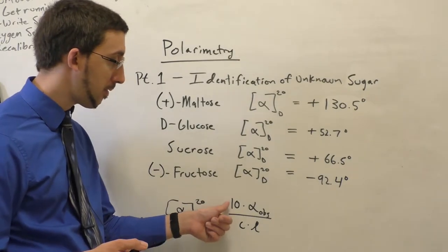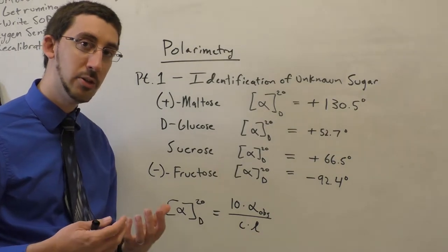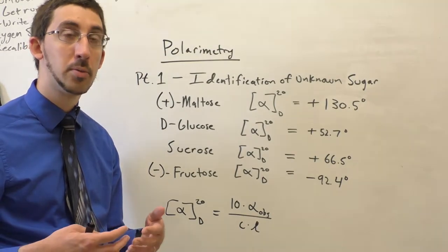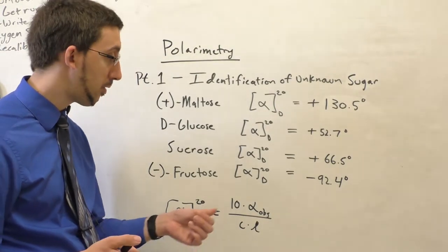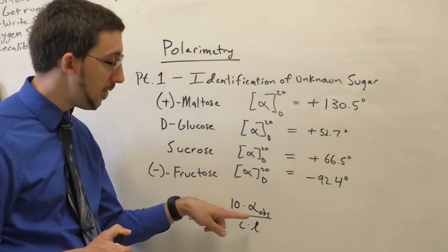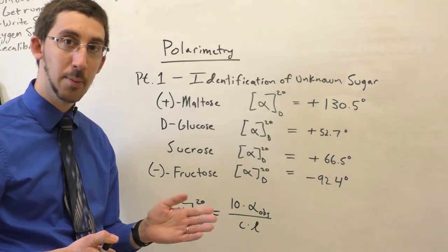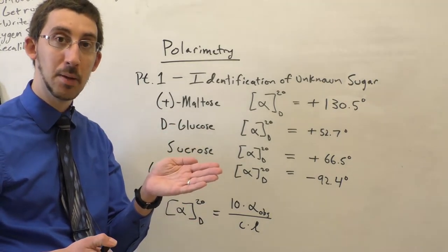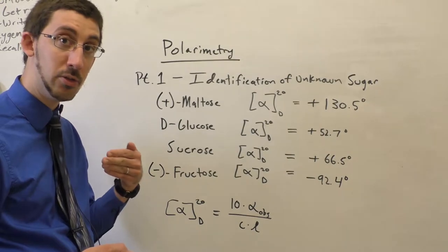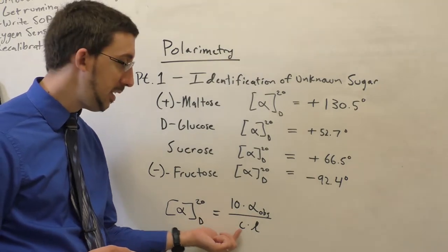And so it's given this form here. So there's a factor of 10 first because in olden times, concentration was reported in grams per deciliter, which is less common than grams per milliliter or grams per cubic centimeter today. And so there's a factor of 10 here for that slight difference. Then we have alpha obs or alpha observed. This is the actual value of rotation that you measure in lab. This is the amount of degrees that the plane polarized light moves between when it first enters the solution and when it exits.